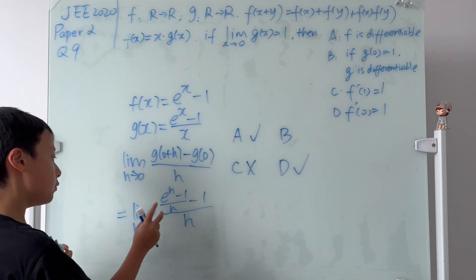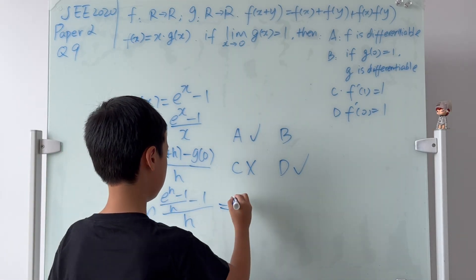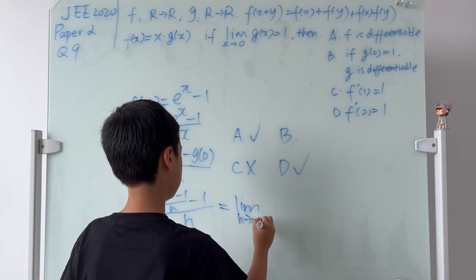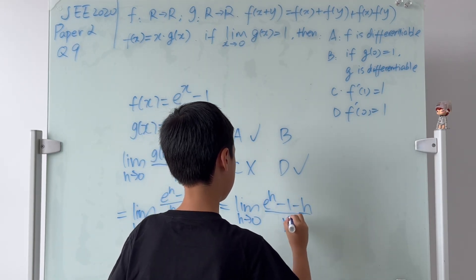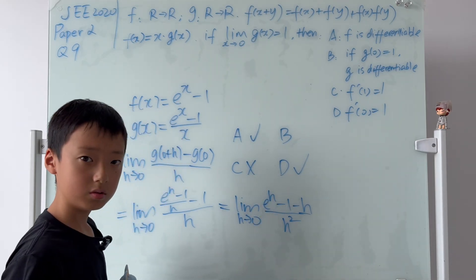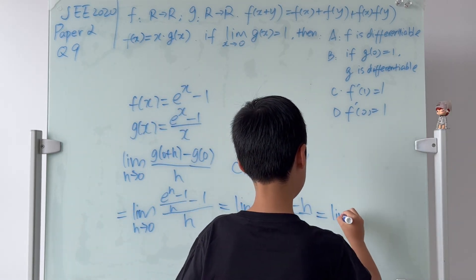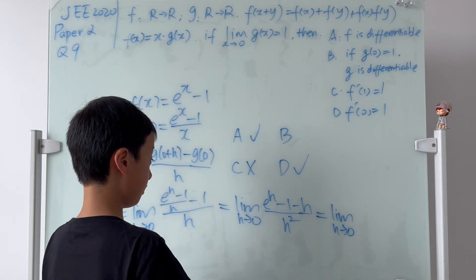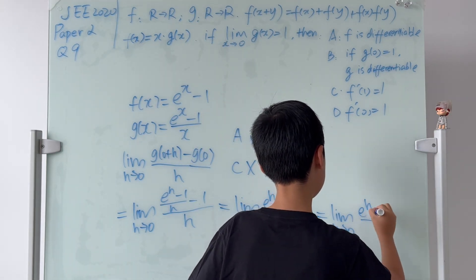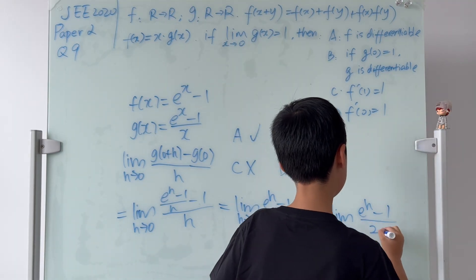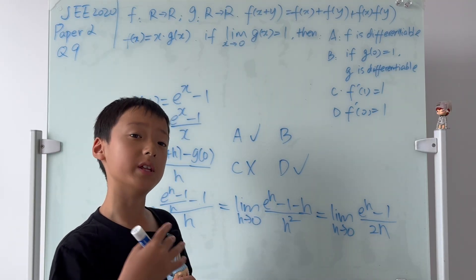Now, from here, we see that there's a fraction on a fraction. So why don't we just multiply h on the top and bottom? So equal to the limit as h goes to 0 of (e^h - 1 - h) over h^2. Why don't we try to plug in 0? It's 0 over 0. So we can use L'Hôpital's rule. Equal to the limit as h goes to 0 of the derivative of the top is just e^h - 1, over 2h. Now, let's plug in 0 again. 0 over 0. So that means we can use L'Hôpital's rule again.